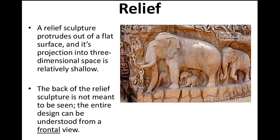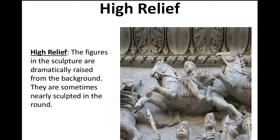Here's the first type of sculpture: it is called relief sculpture. A relief sculpture protrudes out of a flat surface, and its projection into three-dimensional space is relatively shallow. The back of the relief sculpture is not meant to be seen; the entire design can be understood from a frontal view. The second type is high relief sculpture, where the figures in the sculpture are dramatically raised from the background — they are sometimes nearly sculpted in the round.